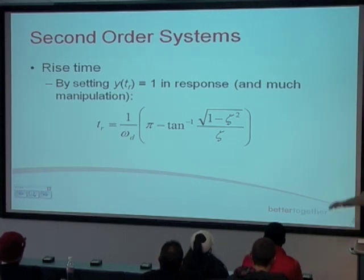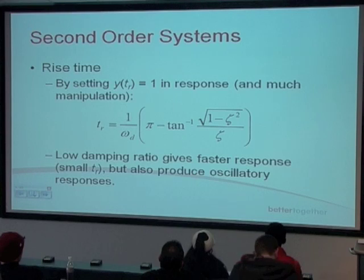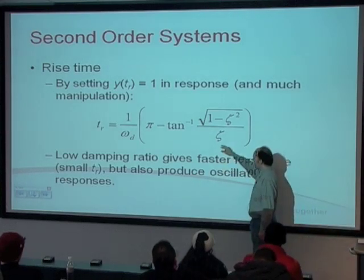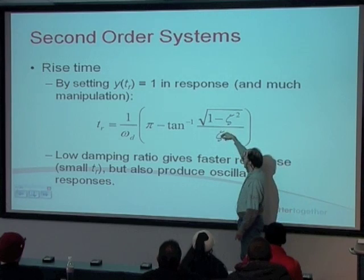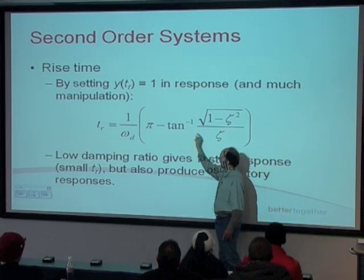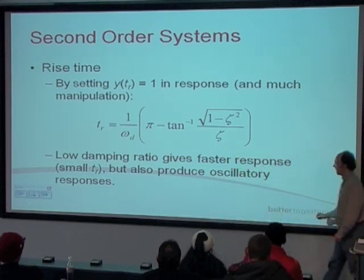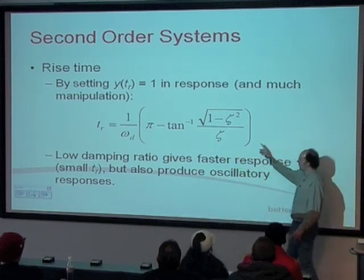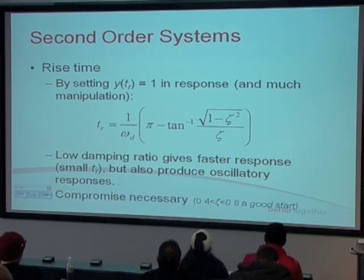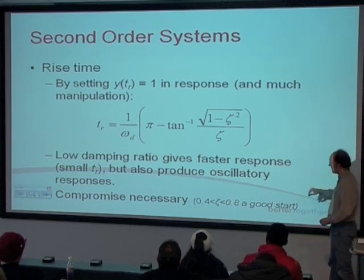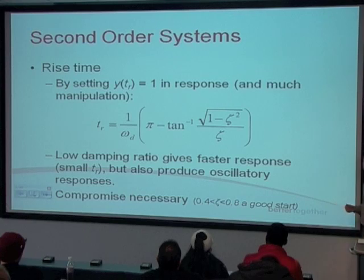On your tutorial sheet you'll get this equation, so you don't need to worry too much about having to remember it. You can see that with a low damping ratio — if zeta is small — you get a faster response, because you get a tangent of infinity which is pi, so you end up with pi minus pi. Whatever's in that bracket will be very small, giving a very quick response. But the issue is you end up with an oscillatory response. Compromising the value for zeta is often necessary; a good start is somewhere between 0.4 and 0.8.